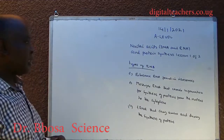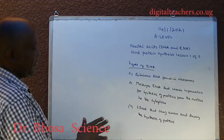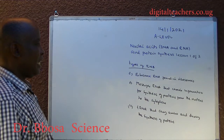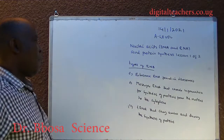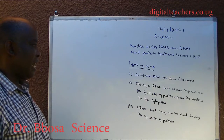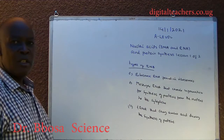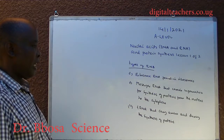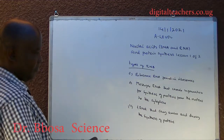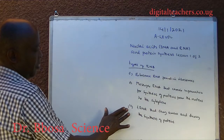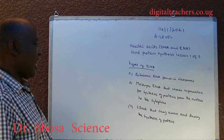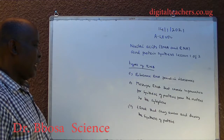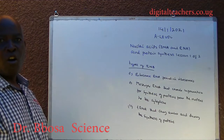Types of RNA. One, ribosomal RNA found in ribosomes. Two, messenger RNA that carries information for synthesis of proteins from the nucleus to the cytoplasm. Three, transfer RNA that carries amino acids during synthesis of proteins. The structure of transfer RNA is shown below.